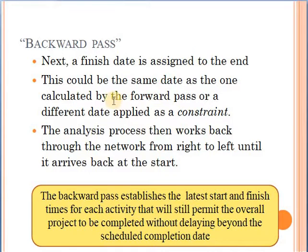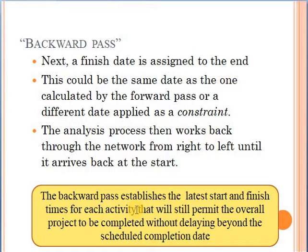In this condition, the contract will put a constraint on you — this is the case where you have a constraint on the finishing date of the project. If you have no constraints, then you can begin the backward pass calculations with the completion time of the project that you got from the forward pass calculations. We'll go from right to left, and with this method we'll be establishing the latest start and the latest finish of each activity, such that we do not delay the completion time of the project.